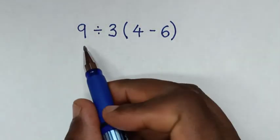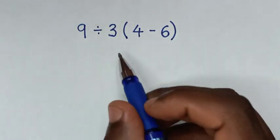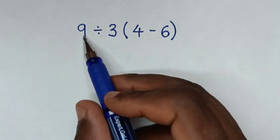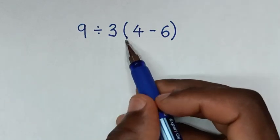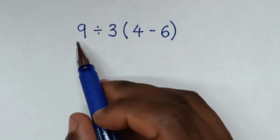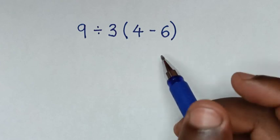Hello, welcome. We're going to solve this math problem using orders of operations. Our problem is 9 divided by 3 bracket 4 minus 6 bracket. We'll solve it using the BODMAS rule.